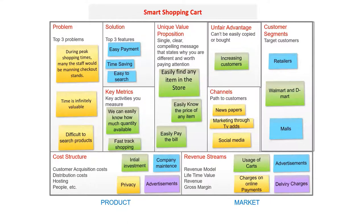We have already talked about the smart shopping cart in our assessment. I am going to tell about some key things in this. If you want to see our detailed smart shopping cart canvas, you can go through the description link. I am going to tell about some key sections of our canvas: problem and solution, key metrics and unique value proposition, unfair advantage, channels, customer segments, revenue streams, and cost structure — going from product to market.